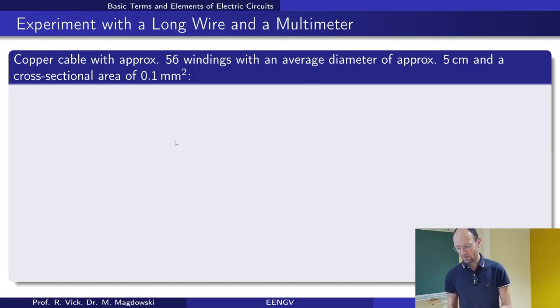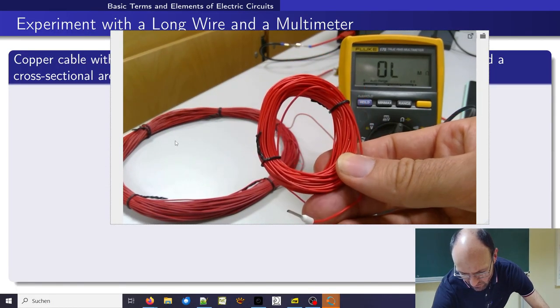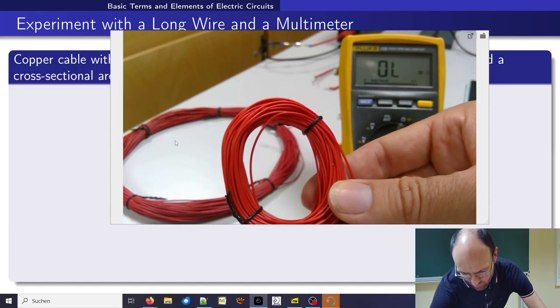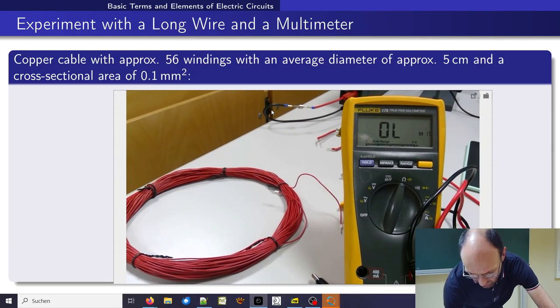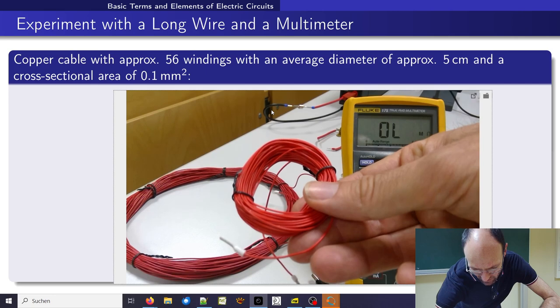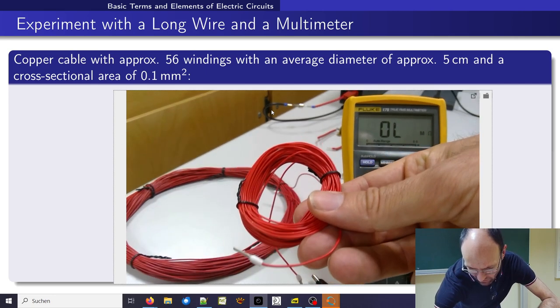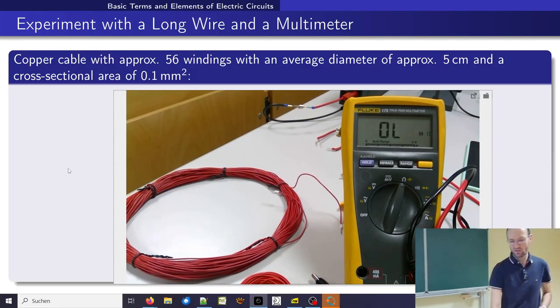I have another copper cable. We could just try to do it again. So this is the other copper cable. It has another number of windings, approximately a diameter. So 56 windings, approximate diameter of 5 centimeter and less cross section area. So it's a thinner cable.